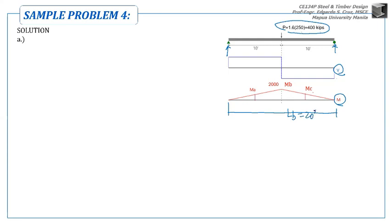How do we solve for the Cb here? Using the formula that we have, we need to identify the Mmax, the MA, MB, and MC. Since our Lb is the full length of 20 feet, in the entire moment diagram, the maximum moment is 2,000. That's the Mmax. At the same time, that's also the MB. MB is defined as the moment at the mid-span of the Lb. So at the middle of Lb, that's MB. So Mmax is just equal to MB also.